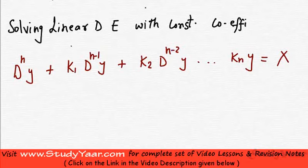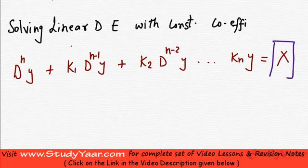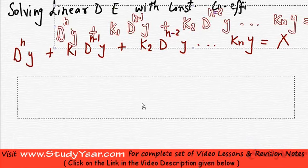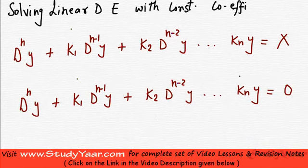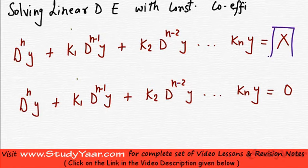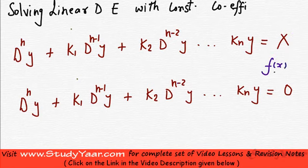Now, let us learn how to solve a linear DE with constant coefficients which is not homogeneous. Up until now, we have been solving equations of this type wherein you had x equal to 0 — a linear homogeneous differential equation with constant coefficients. Now, we are trying to solve this type of equation where x is not 0, but is some function of small x.